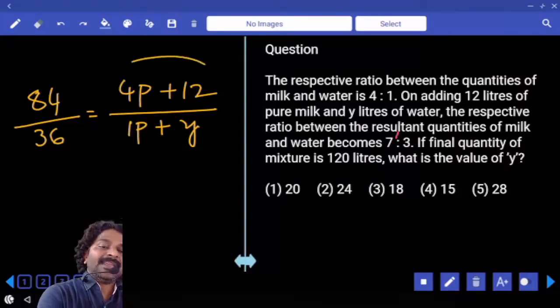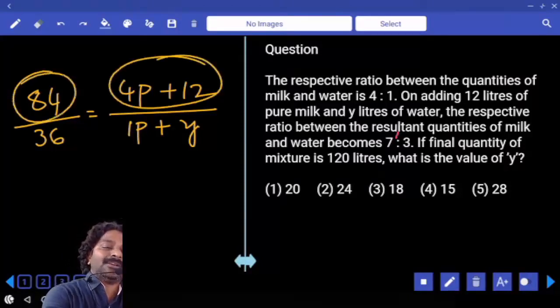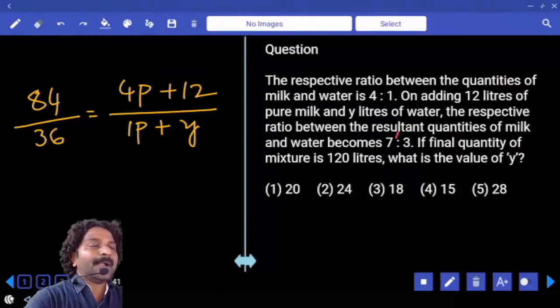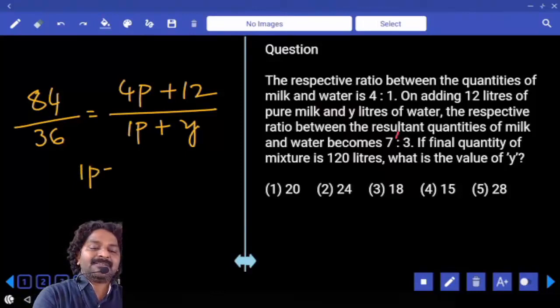Can I say 4 parts plus 12 is equal to 84? Then 4 parts is equal to 72. 1 part is equal to 72 by 4, which is equal to 18.